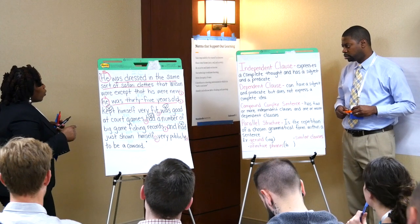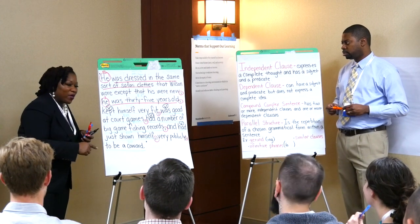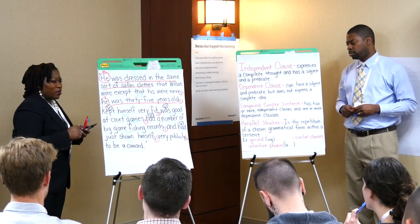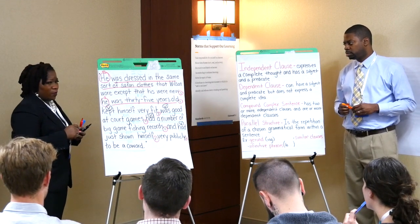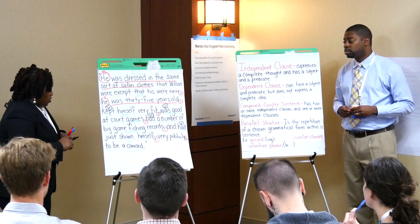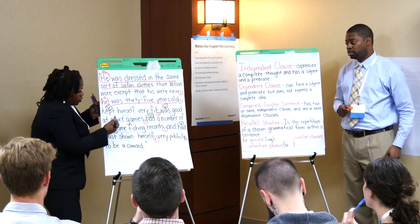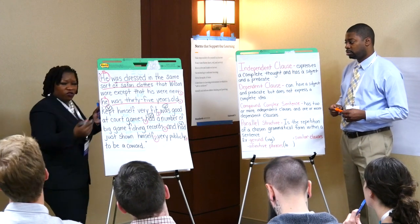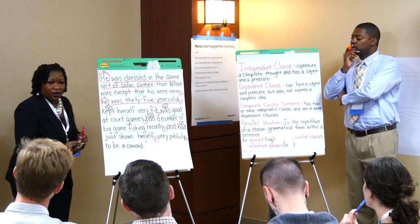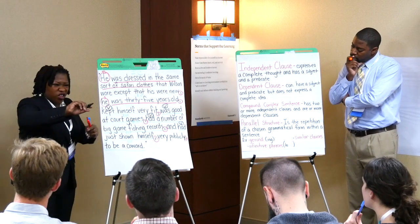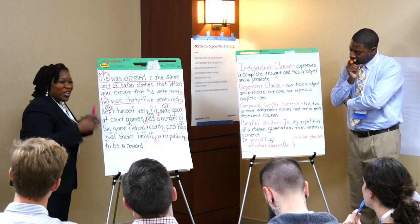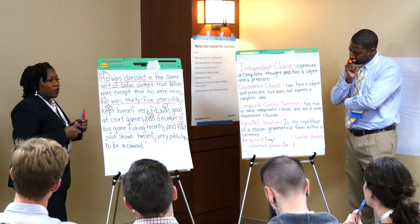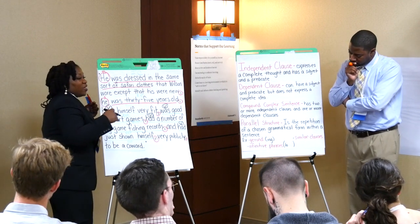Very good. So there's something that happens at the end of the sentence. Each one of these dependent clauses starts with a verb and we hear this rhythm. But then, what happens at the end? It's interrupted. It's interrupted, right? The author intentionally breaks it. So why does he break that rhythm? What does he want to indicate to us?